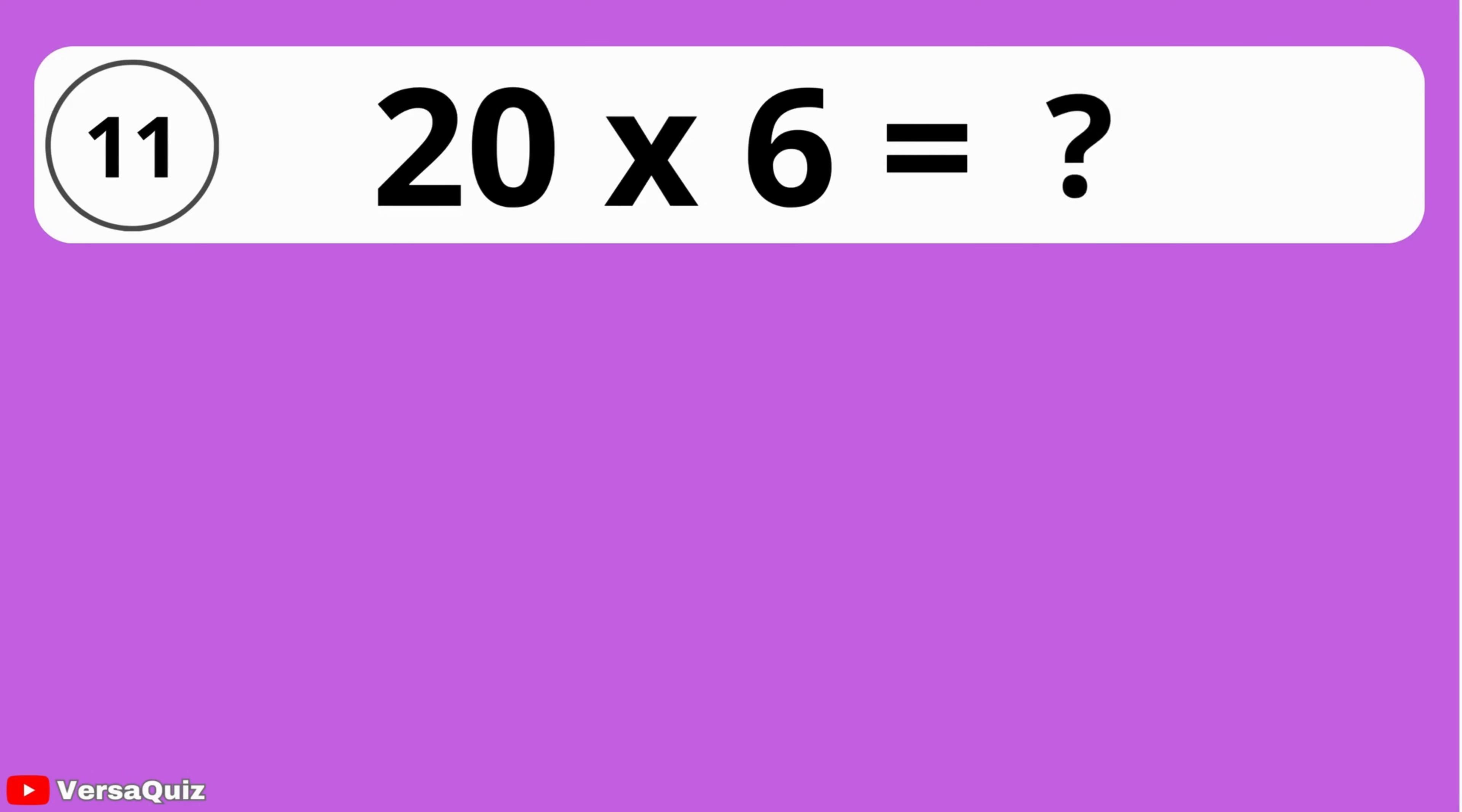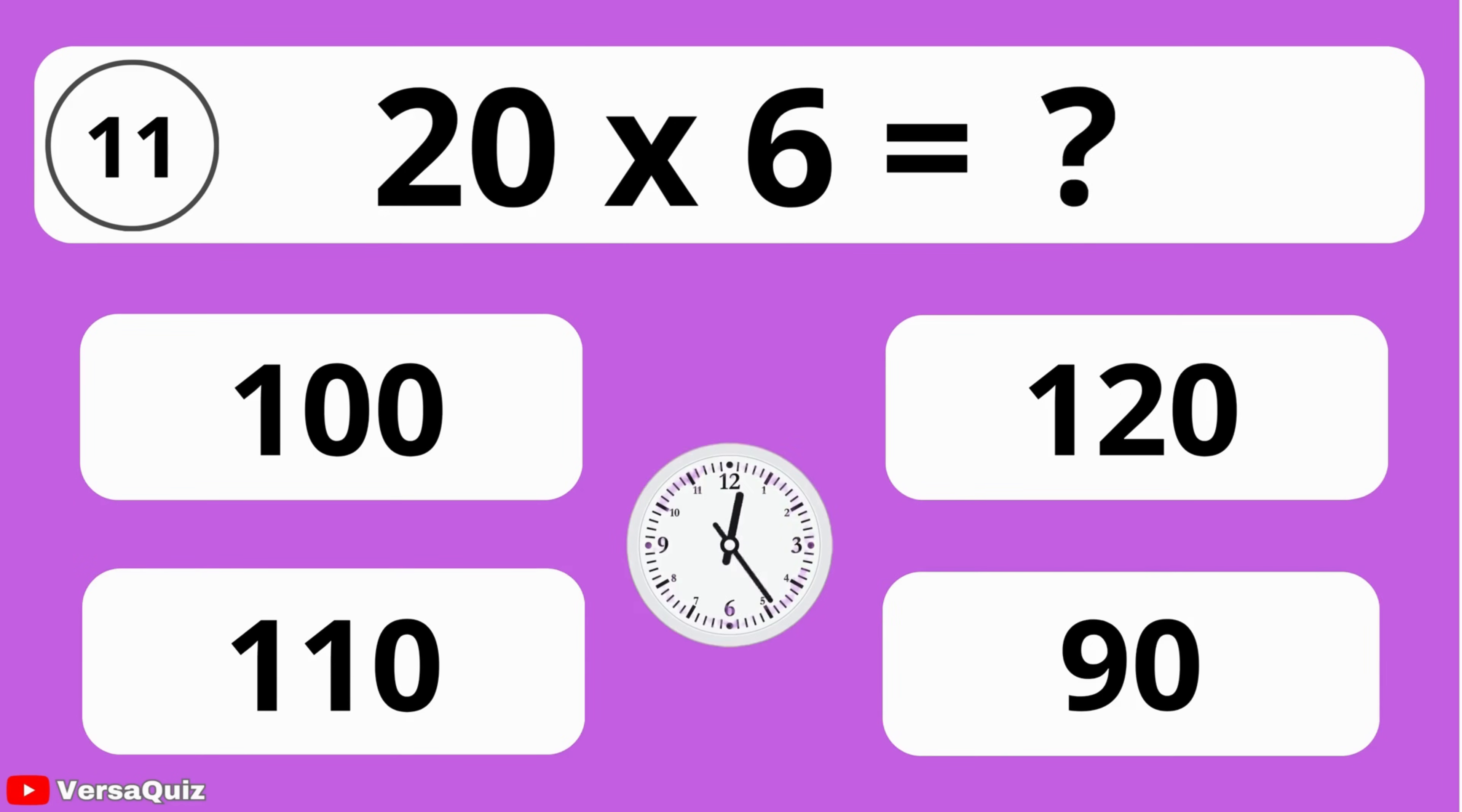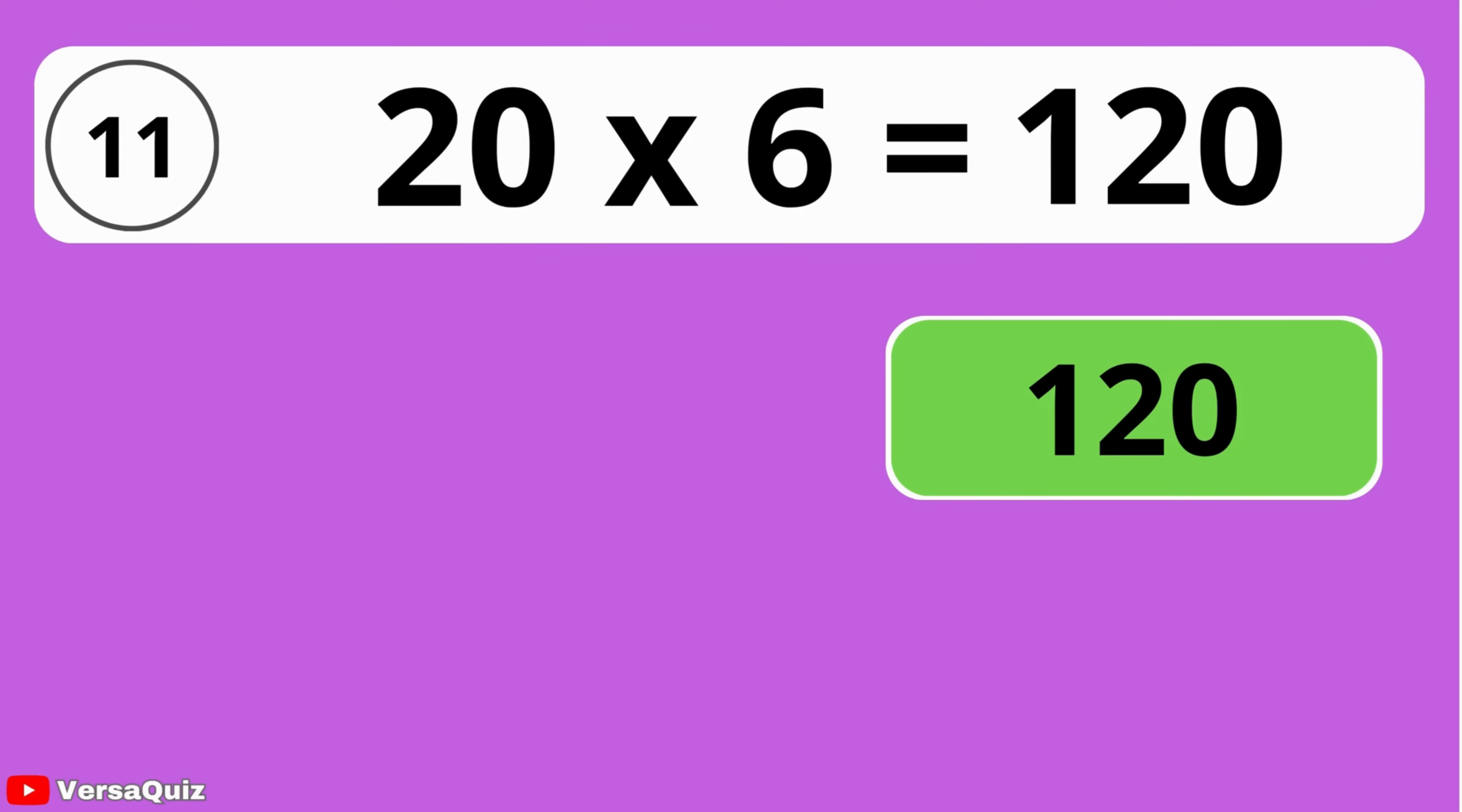What is 20 times 6? 100, 120, 110, or 90? The answer is 120. 20 times 6 is equal to 120.